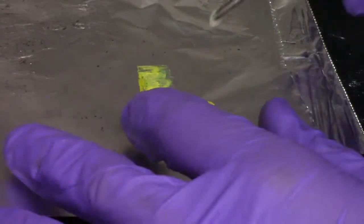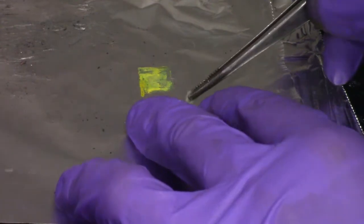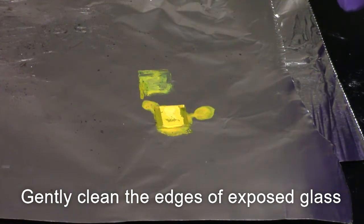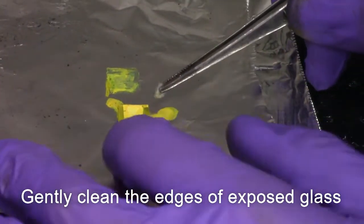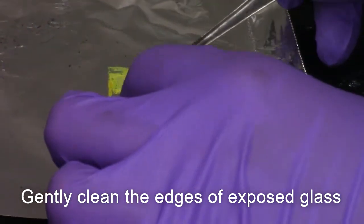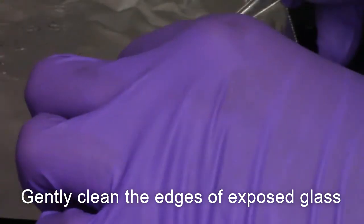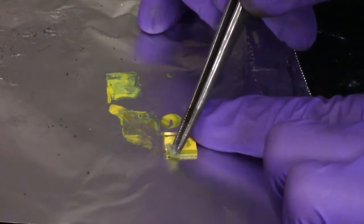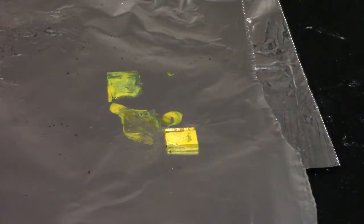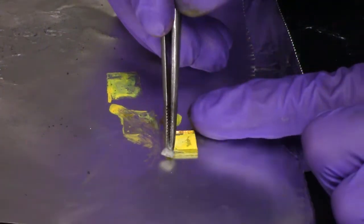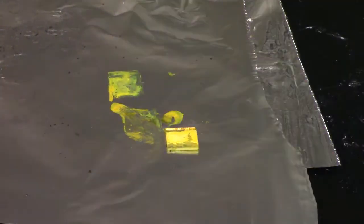After the dye has dried on the TiO2, take a very small amount of tissue paper and gently saturate it in ethanol. Carefully wipe the edges of the exposed glass with excess dye. This will allow proper measurements when the full cell is constructed. When completing this step, take special care not to disturb the TiO2 surface.